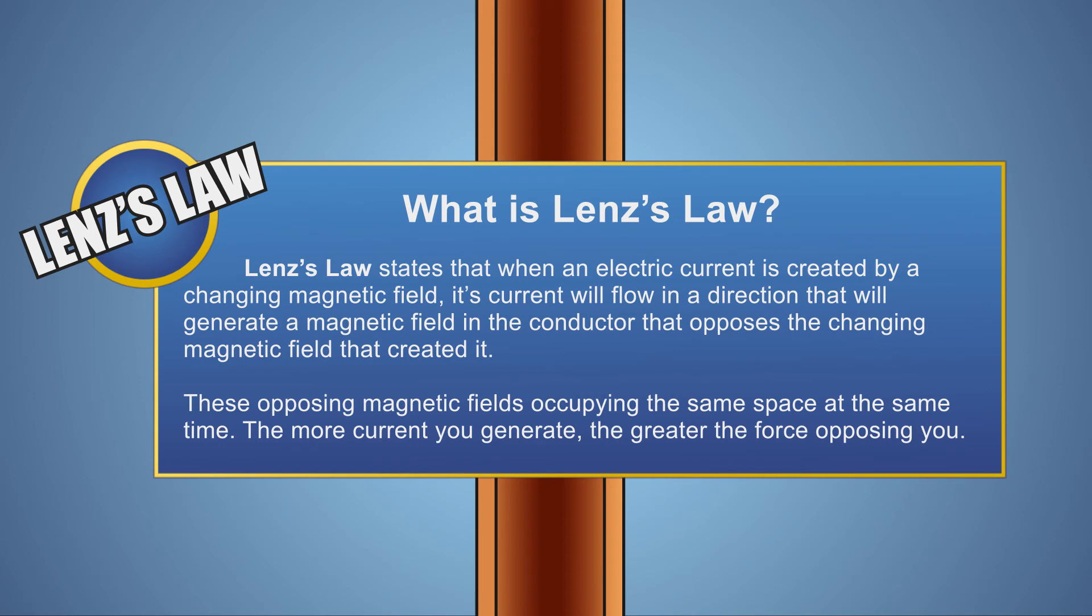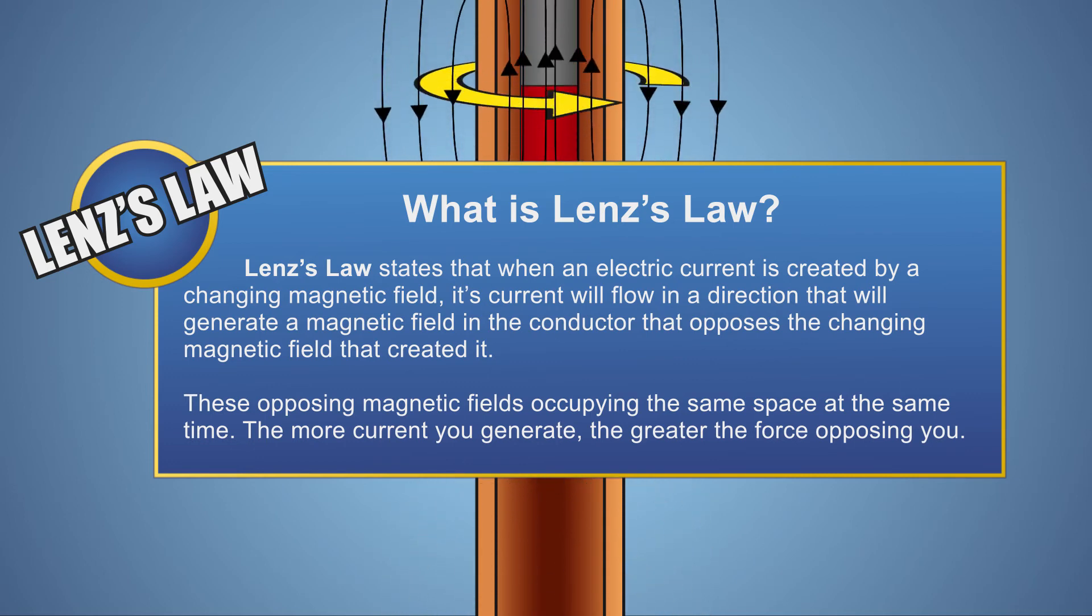Lenz's Law states that an electric current generated by a source, such as a changing magnetic field, will always create a counterforce opposing the force that originally created it.